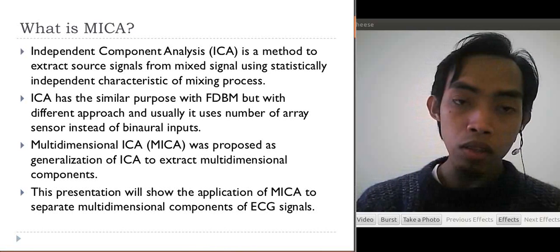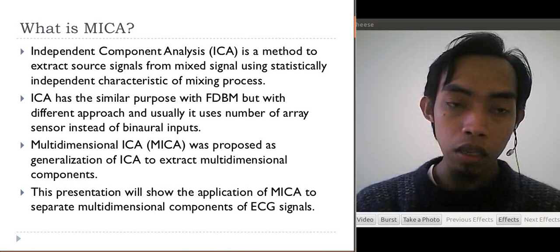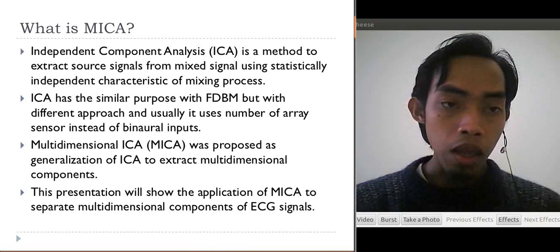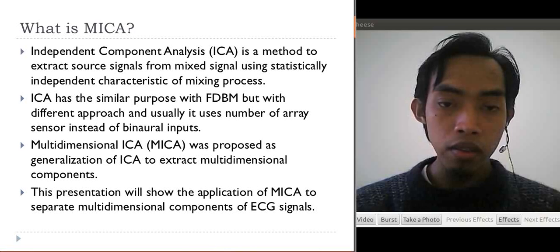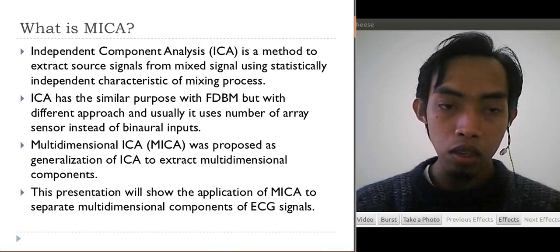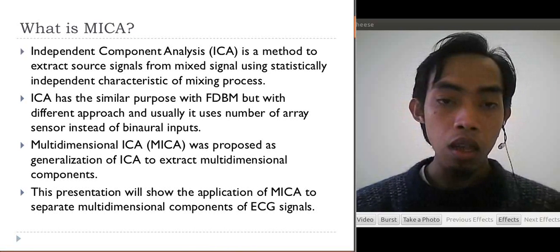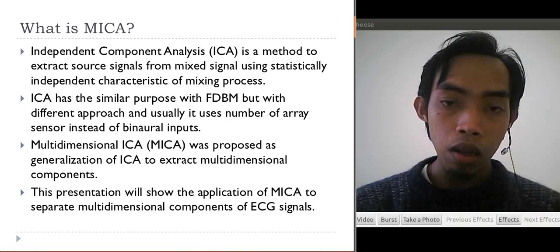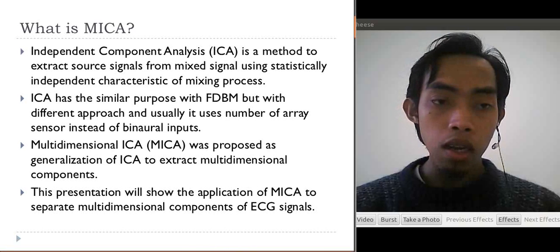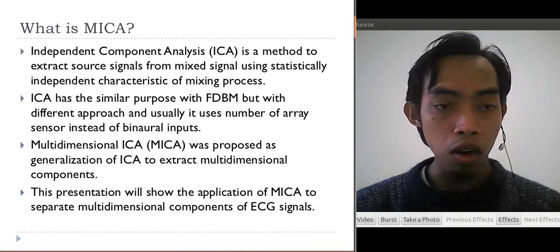If there are two or more independent signals mixed, it can be separated using statistically independent concepts. ICA has similar purpose with Frequency Domain Binaural Model or FDBM to extract sound sources, but it uses a different approach. ICA uses statistically independent methods and FDBM uses a binaural model using ITD and ILD. Usually ICA uses a large number of arrays but FDBM uses just two sensors or binaural inputs.